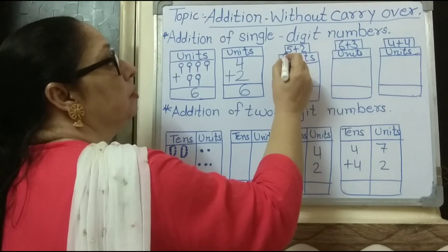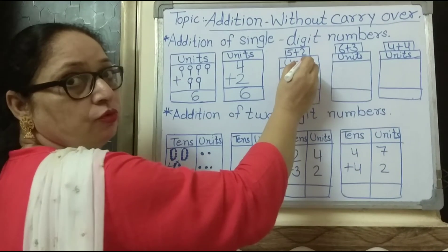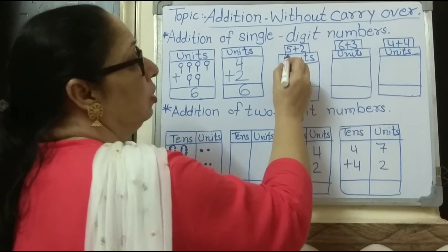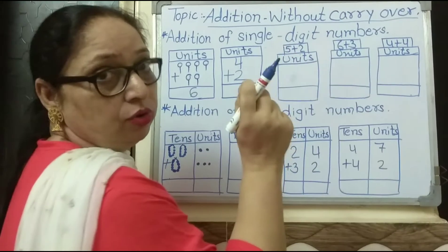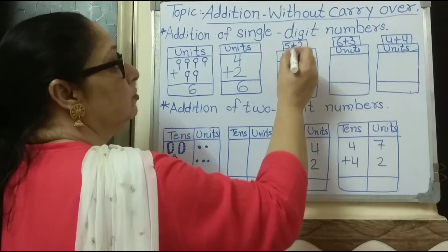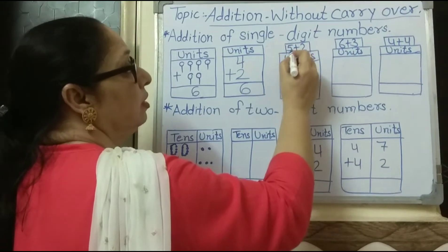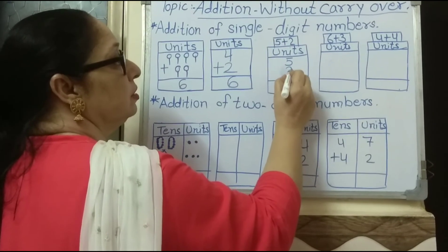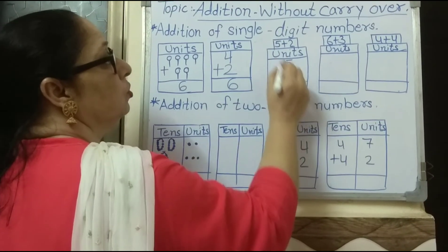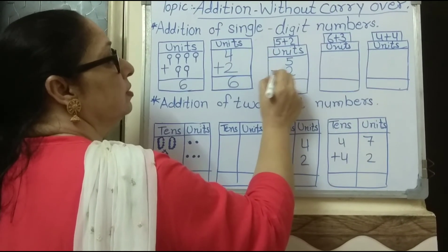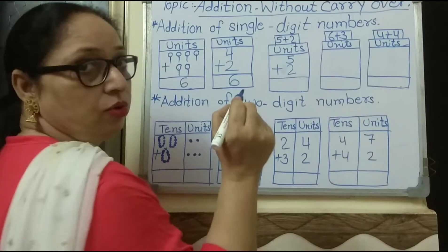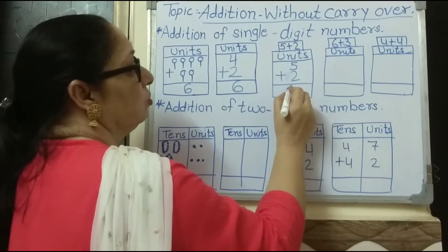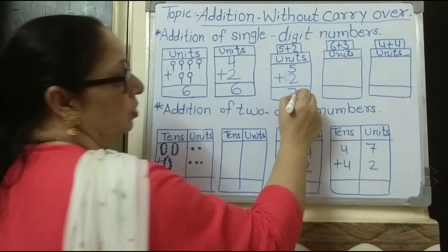The next number is five plus two. The column here is units — only units are there. Write the first number, five, in the units column. Five plus two. Draw the addition sign. Five plus two is equal to seven.